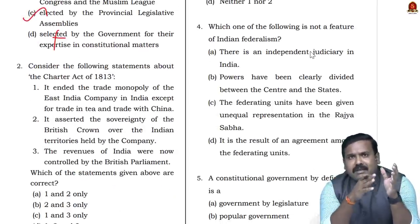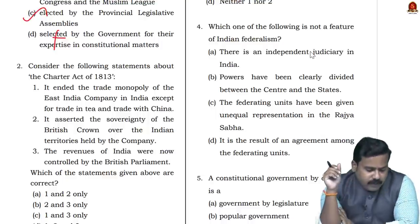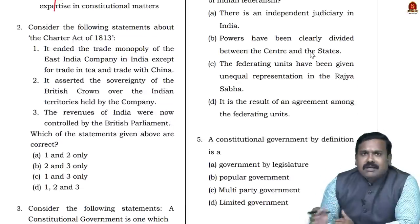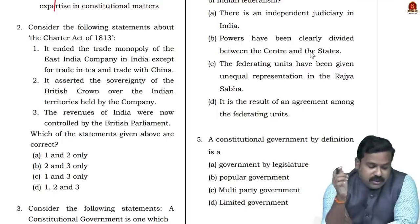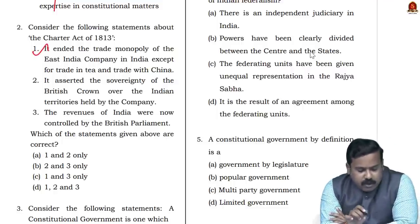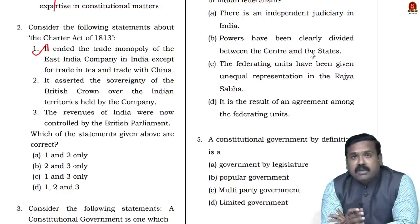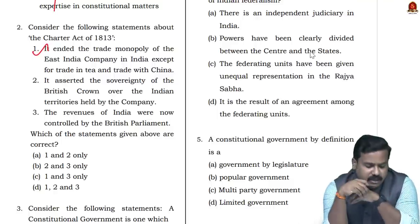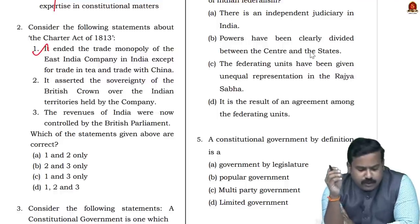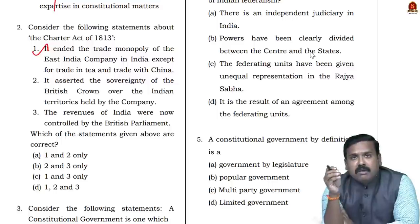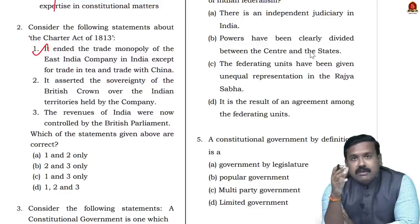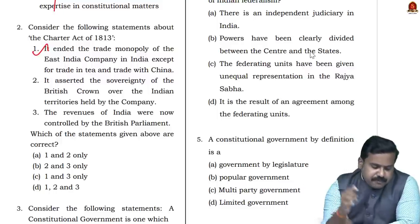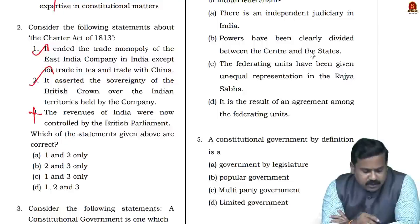The second question: Consider the following statements about the Charter Act. First, it ended the trade monopoly of the East India Company except for trade with Tibet and China — this is a correct statement. Second, it asserted the sovereignty of the British Crown over Indian territories held by the company — yes, correct. Third, the revenues of British India were controlled by the British Parliament — this was not given exactly, revenues were controlled later in the 1850s, so this statement is wrong. The answer is one and two.